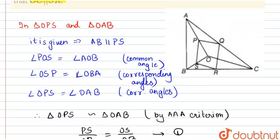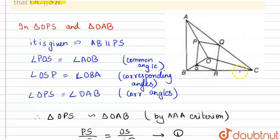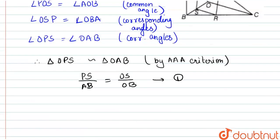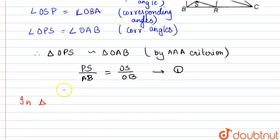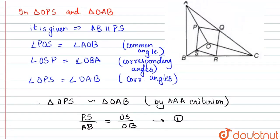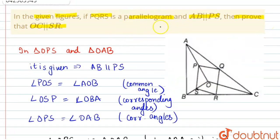Now we take triangle CQR and triangle CAB. We know AB is parallel to PS, and PS is parallel to QR because PQRS is a parallelogram. Therefore AB is parallel to QR. So we can write: AB is parallel to PS, which is parallel to QR.